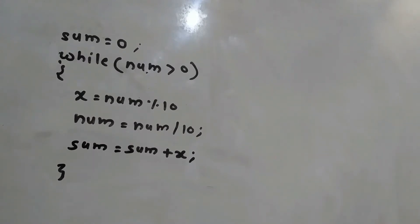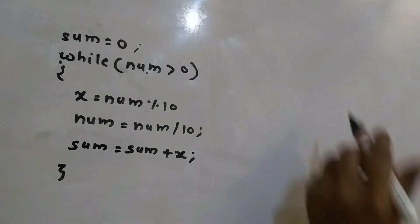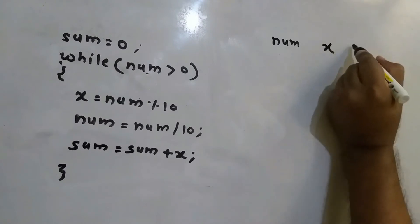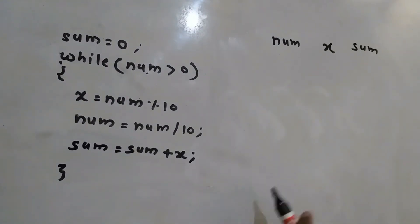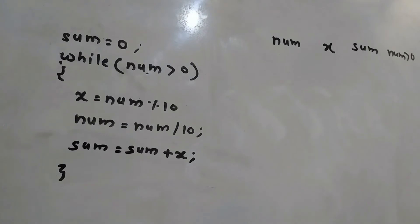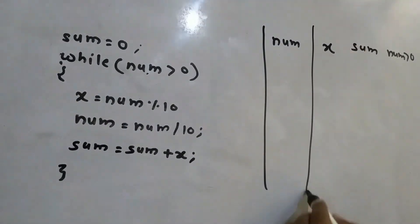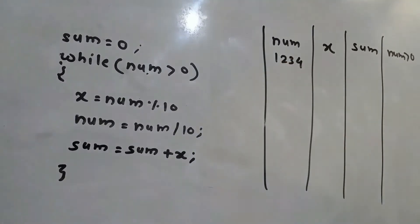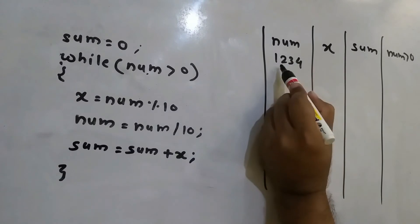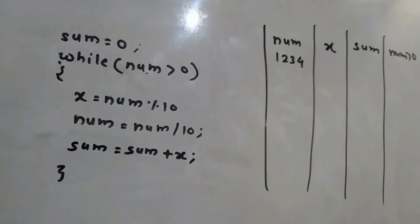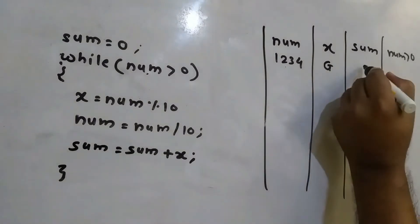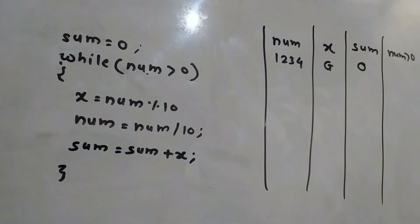Let's see how it is calculating the sum of digits. The variables used in this code are: num, x, and sum. The while loop condition is num greater than zero. num is initially accepted from the user — suppose the input is 1234. The expected sum of digits is 1+2+3+4 = 10. x has no initial value (garbage), and sum is initially zero.